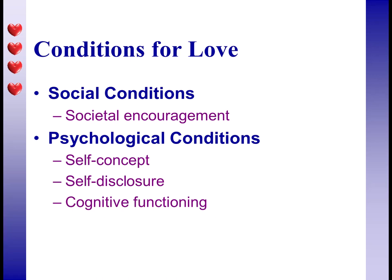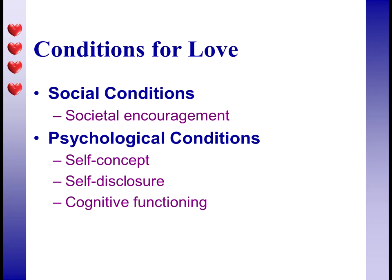Psychological conditions include self-concept — you may have heard that you have to love yourself before you can love others and allow them to love you. Reciprocal self-disclosure also has to happen for love to develop; that's where trust is built over time. Cognitively, a person has to have the mental ability to understand that they're in love and what that means — though the bar might be pretty low for that, because as Forrest Gump said: 'I'm not a smart man, but I know what love is.'